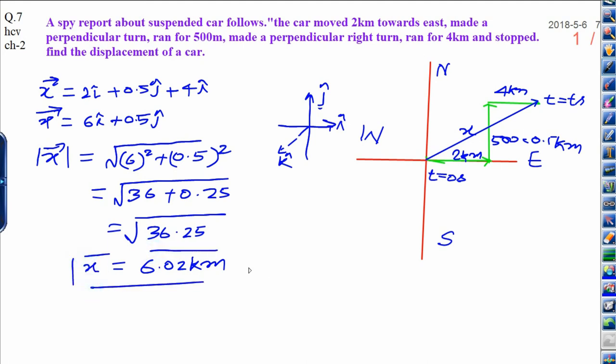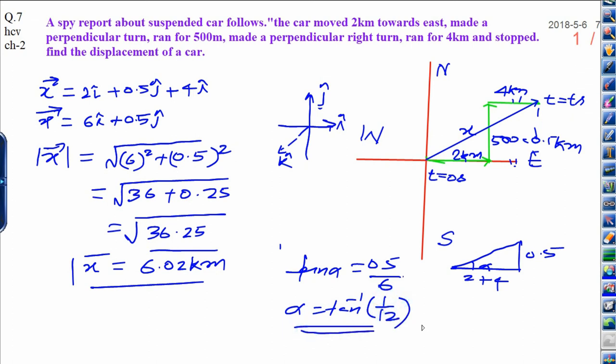Now, in second part, as displacement is a vector quantity, you need to calculate the direction. You can calculate the direction by drawing this diagram by this way. Here it is 0.5, and it will be part of 2. 1 is 2 km plus another is this value also 2. This value when you draw this way, and that will be 4. 2 plus 4 is 6. Now, you can write this is suppose that alpha, and tan alpha can be written as 0.5 upon 6. Alpha can be written as tan inverse of 5 by 60, that is 1 upon 12. This will be the answer.